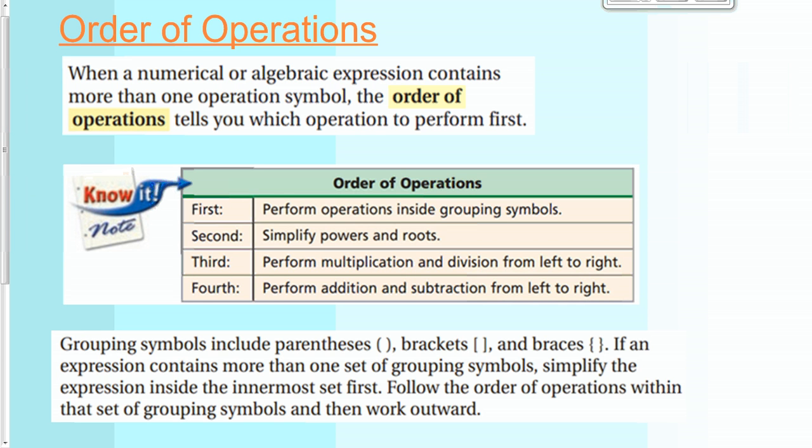So basically the order of operations - the basis for it is because in order to get to a correct answer, we have to do everything in a correct order. And you can see on this chart here the first thing you want to do is perform operations inside grouping symbols. Second, you want to simplify powers and roots. Third, perform multiplication and division from left to right. That's going to be key. Those are done on the same level. And then fourth, perform addition and subtraction from left to right.